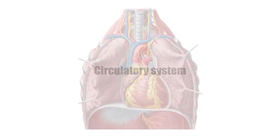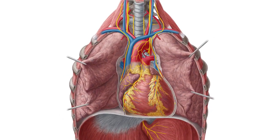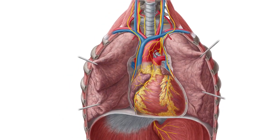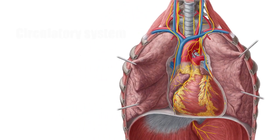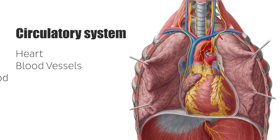Definition and anatomy of the circulatory system, or the cardiovascular system. The circulatory system is comprised of the heart, the blood vessels, and the blood.